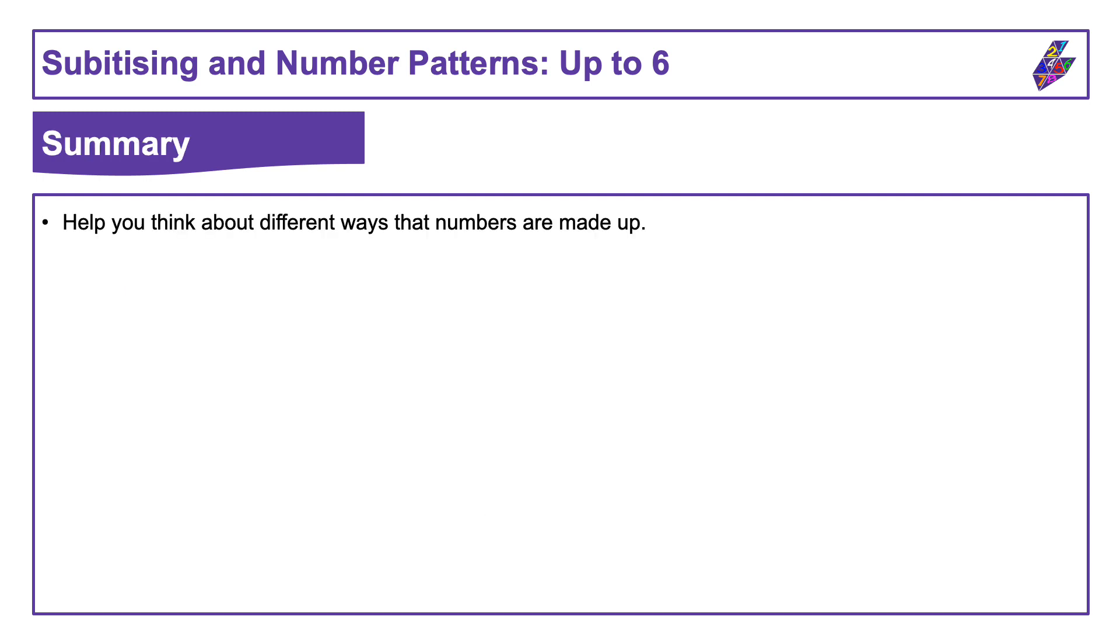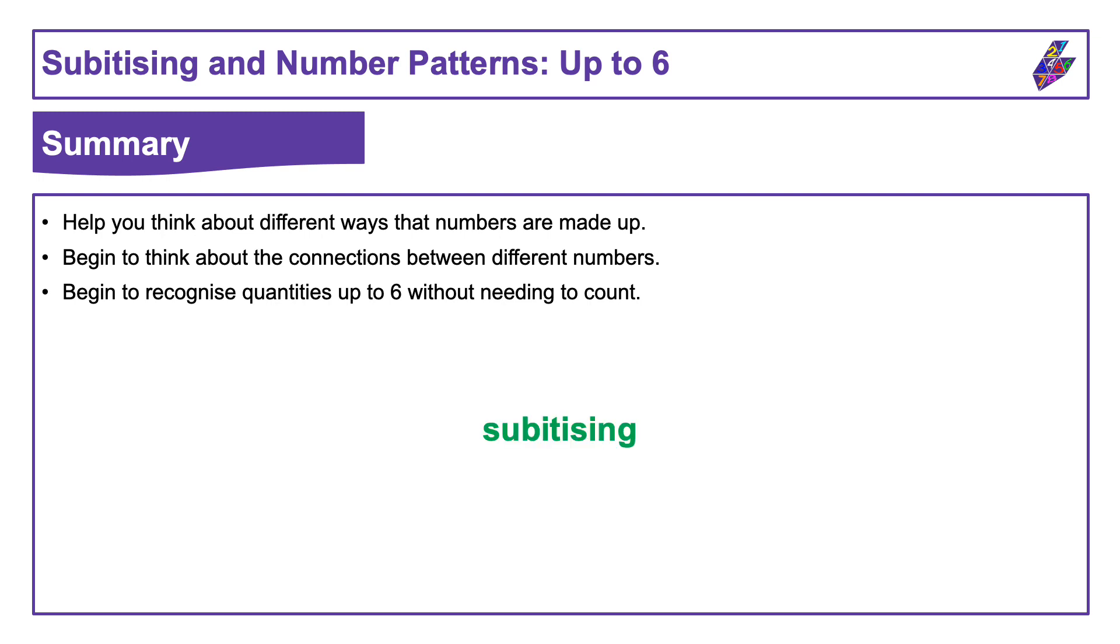So to summarise, hopefully that's helped you think about different ways that numbers are made up. We started to think about the connections between different numbers, and we started to recognise quantities up to six without needing to count. This was known as subitising.